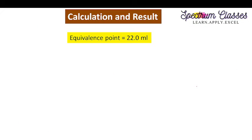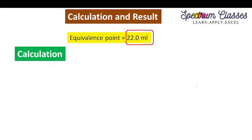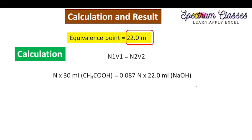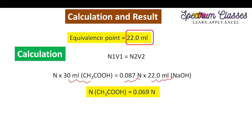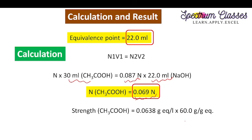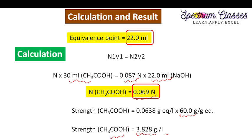The equivalence point from the graph is at 22 ml. Putting the values into the normality equation — 30 ml of acetic acid taken, normality of NaOH, and 22 ml consumed — we calculate the normality of acetic acid. Multiplying normality by the equivalent weight of acetic acid (60 g per gram equivalent) gives 3.828 grams per liter. This is how one can determine the strength of the acid using pH metric or potentiometric titration.